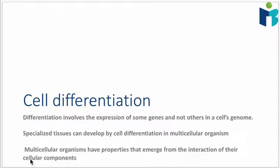Hey guys, in this video we're going to talk about cell differentiation — what that means and how it happens. We're going to talk about how this leads to the formation of specialized tissues and how these tissues are able to interact with each other to get what we call emergent properties. So let's talk about what exactly that means.